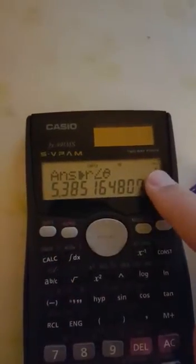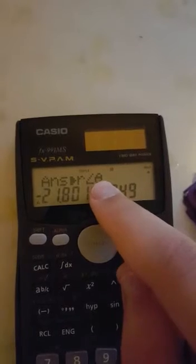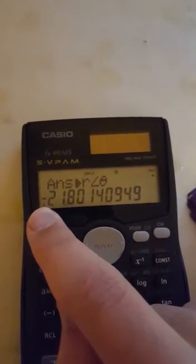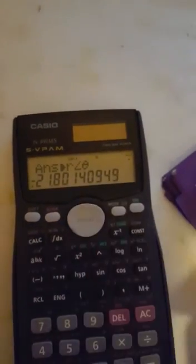Now instead of the i showing up, since we're not dealing with the imaginary number, we're dealing with the angle, it shows the little angle symbol. So it helps you make sure that you're on the right mode. The negative 21.8 would be that angle that you put next to it.